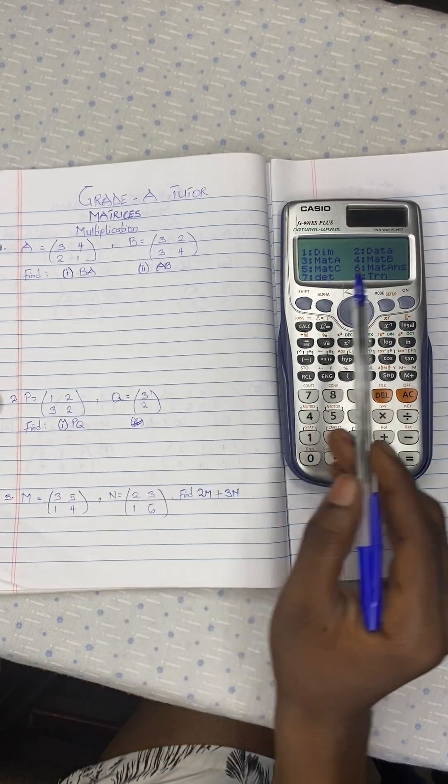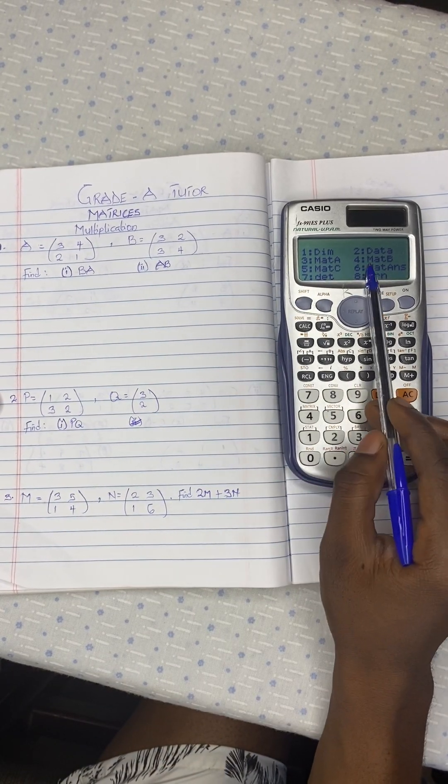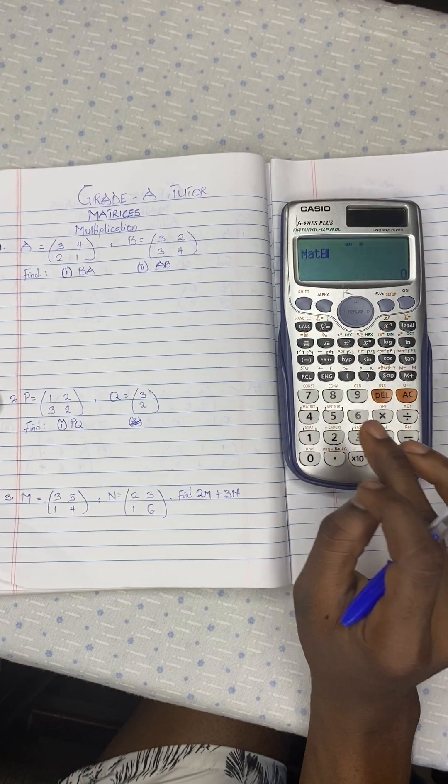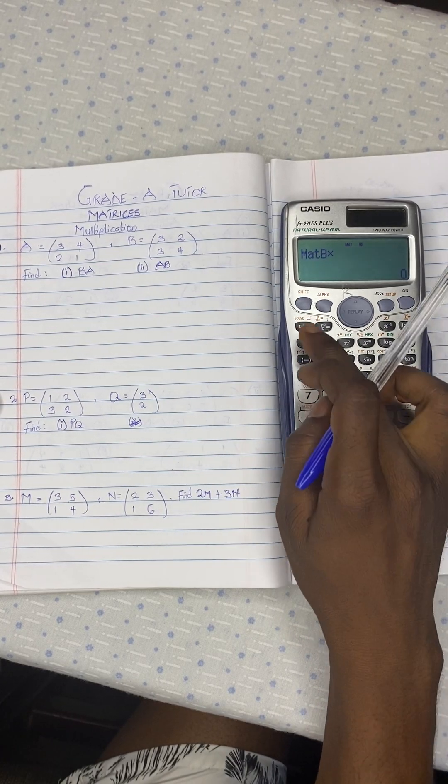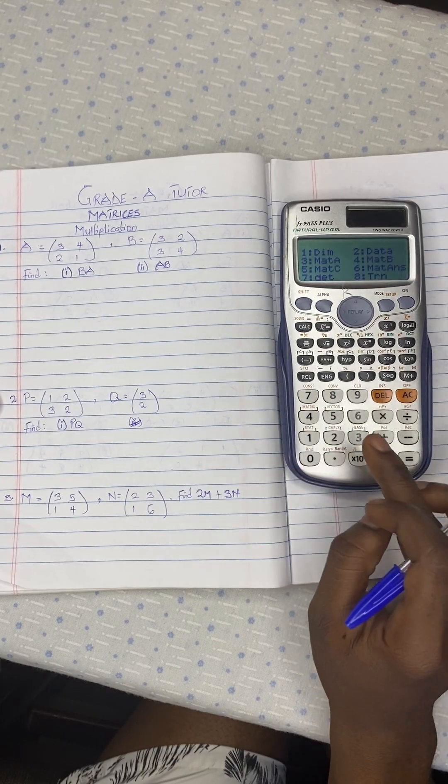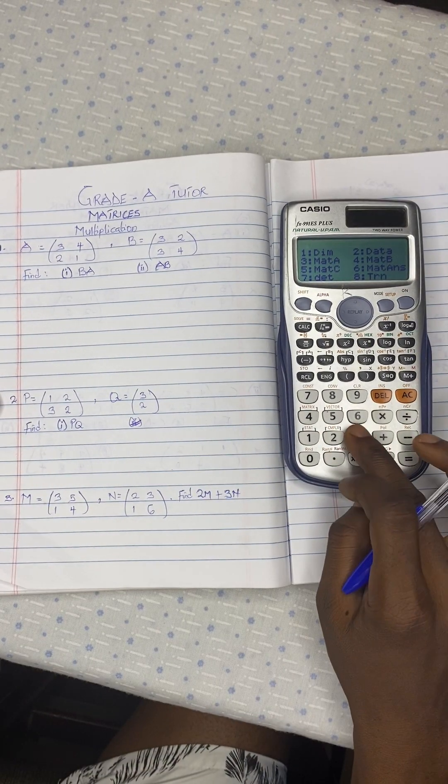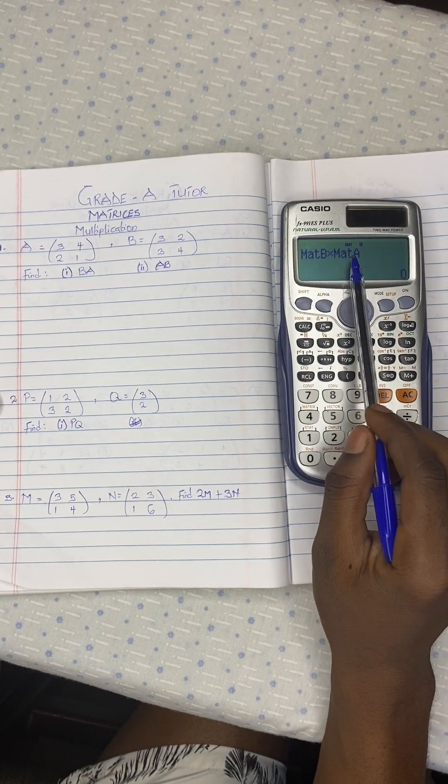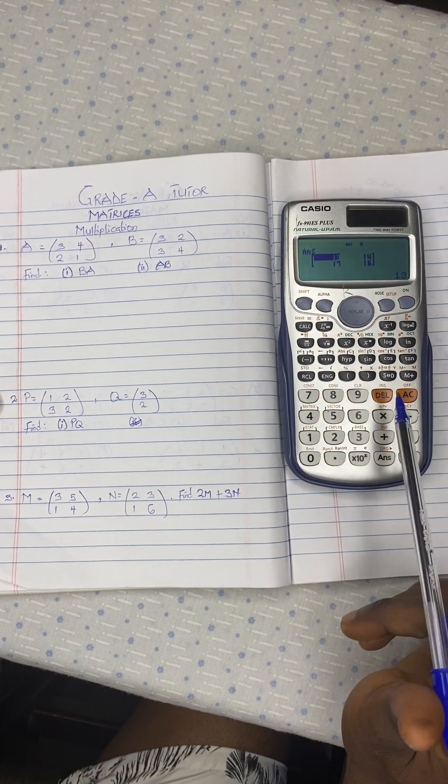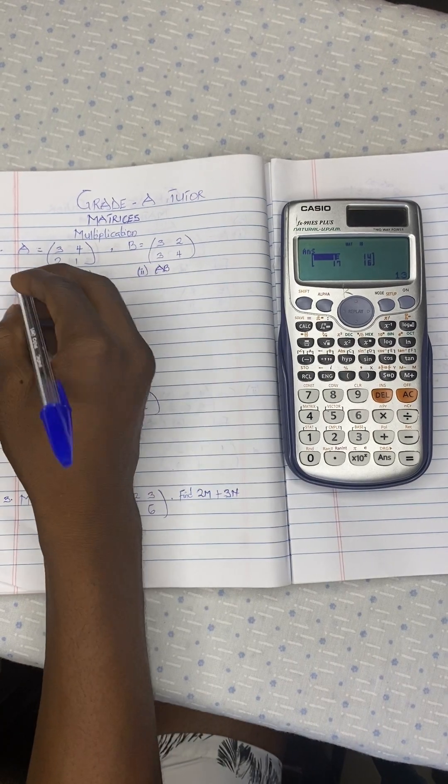So B, we know the matrix B was here. So we say 4, multiply. We come to the menu and we choose the A because it is BA. So matrix B times matrix A, as simple as that. Then you press on the equal to. So there's your final answer.